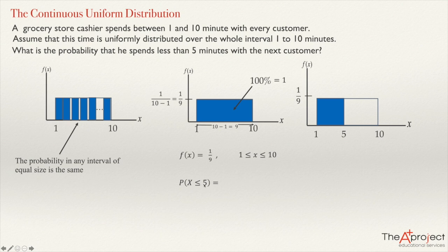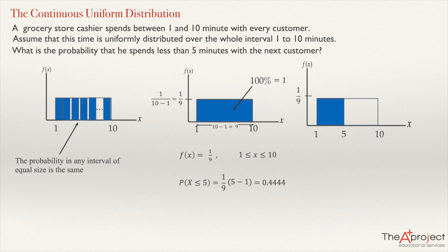The probability of X less than or equal to five — that means I'm looking for the cumulative probability up to five. This area will be one over nine multiplied by five minus one, which equals four. Using a calculator, that gives 0.4444. So there is a 44.44% probability that this cashier spends less than five minutes with the customer.